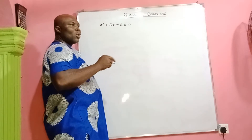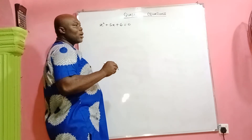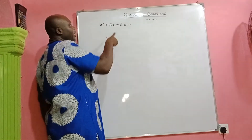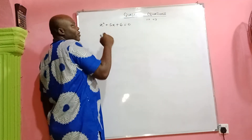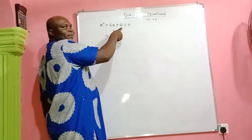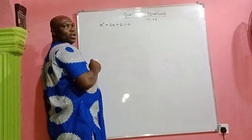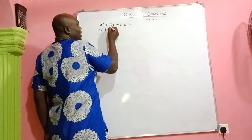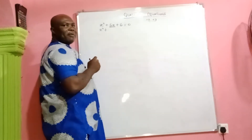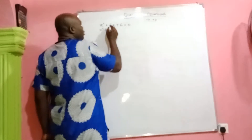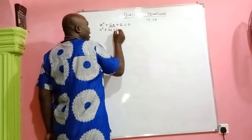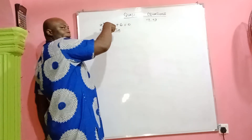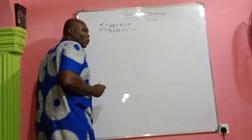There are only two numbers in the whole world that will satisfy that condition, and they are positive 2 and positive 3. Because if you take 2 + 3 you get positive 5, and if you multiply them you get positive 6. So we are going to have x² and instead of writing 5x, we split it into those two numbers: 2x + 3x, because 2x + 3x gives us back 5x. Then plus 6 equals 0.